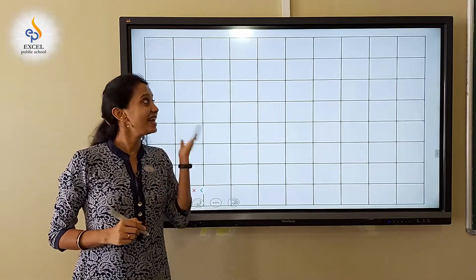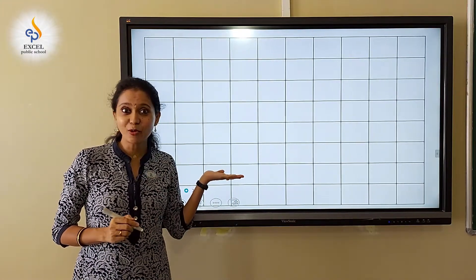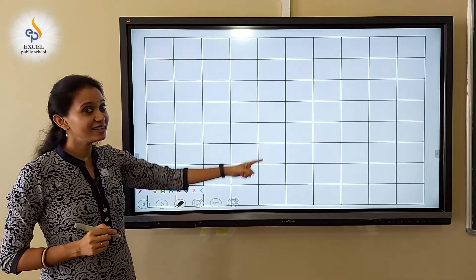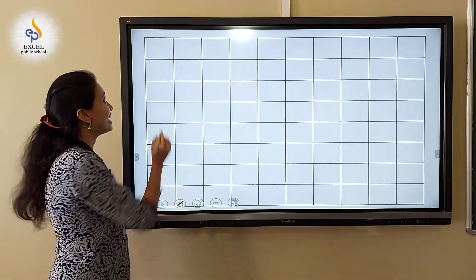Children, now let's write on the IDT board. Can you see here? What are all these? Squares. Now, we will write number one.